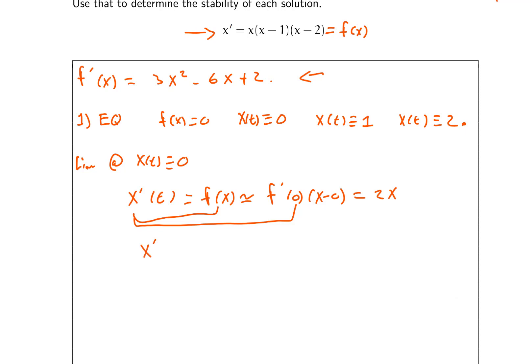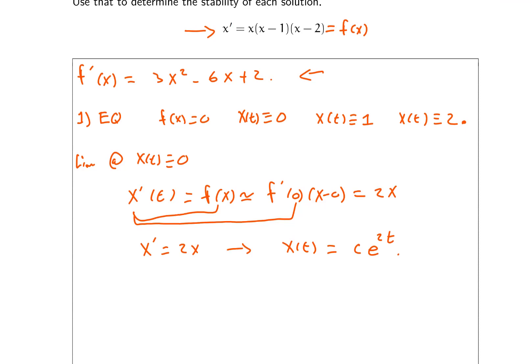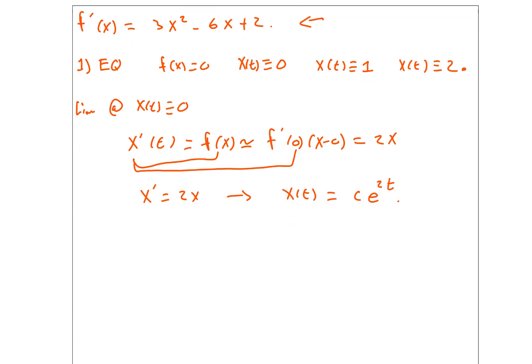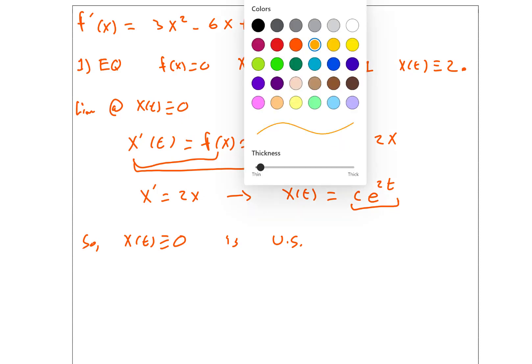Using our formula for f prime of X, we see f prime of zero is 2, so X prime is approximately equal to 2x. Solving the equation X prime equals 2x gives the general solution X of t equals c times e to the 2t. So solutions close to zero behave like c e to the 2t, which means the equilibrium solution X of t equals zero is unstable — solutions that start close to zero get farther and farther away.